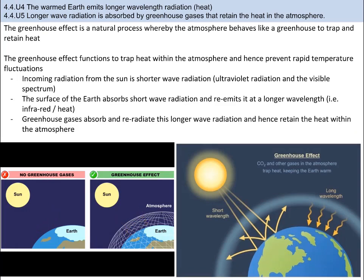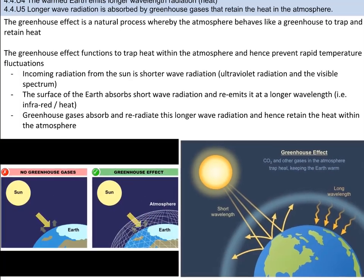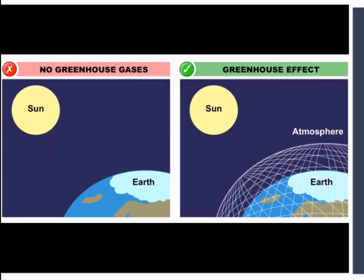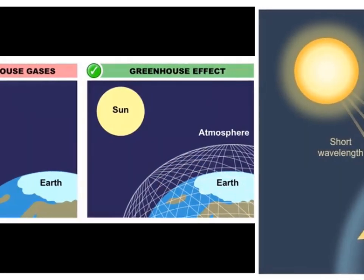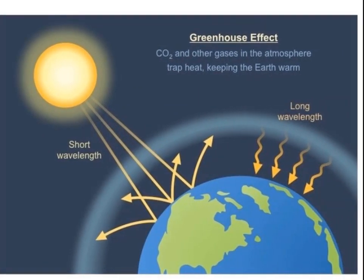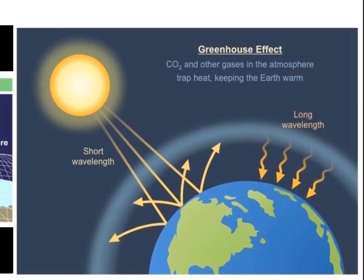The greenhouse effect is a natural process whereby the atmosphere behaves like a greenhouse to trap and retain heat. This ensures the Earth maintains the moderate temperatures needed by organisms to maintain life processes like homeostasis. Without a greenhouse effect, Earth's temperatures would drop significantly at night in the absence of direct sunlight. The sun delivers short-wave radiation to the Earth — think ultraviolet or UV radiation. The Earth absorbs that short-wave energy and re-emits long-wave energy, like infrared or heat energy. Greenhouse gases absorb some of this long-wave energy and re-radiate it back towards Earth, causing it to act like a blanket, keeping the heat in so it will not all be lost to space.